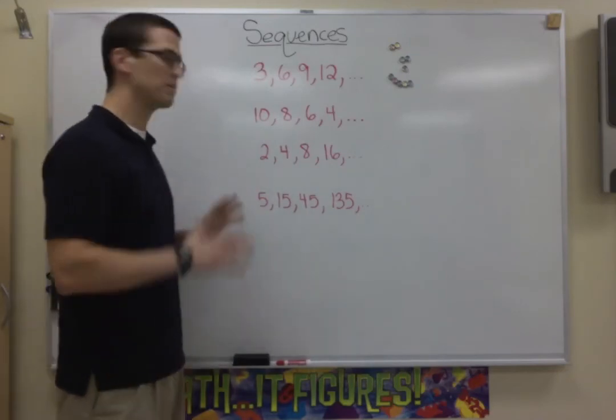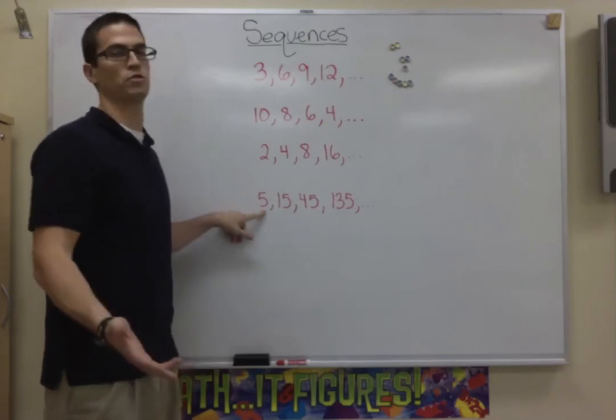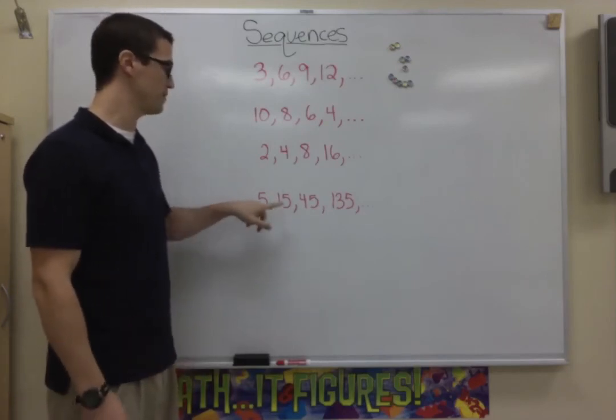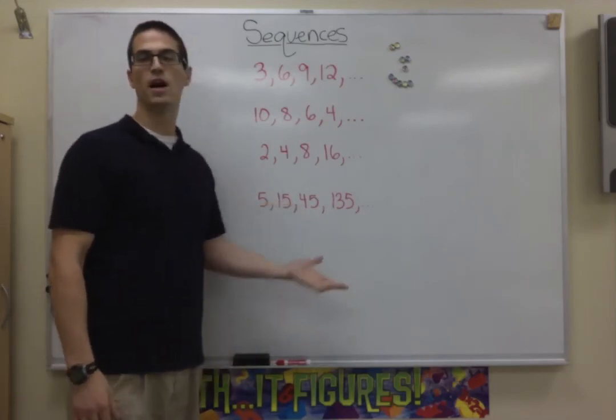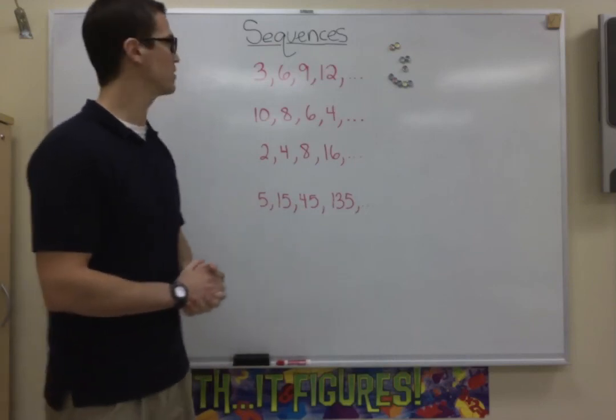This last one is going to be strictly multiplication, where you take the number and you're just multiplying it by 3, 5 to 15, 15 to 45, and so on. So that's a brief introduction to sequences.